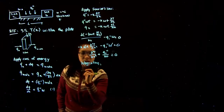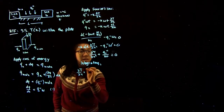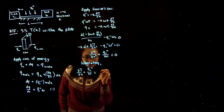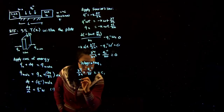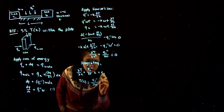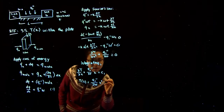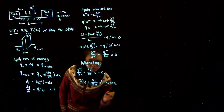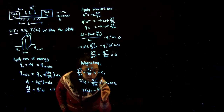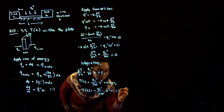Integrating we get that dT/dx plus Q0 over Kt times x is equal to C1. And the temperature profile is equal to minus Q0 over 2Kt times x² plus C1x plus C2, so T(x) equals minus Q0 over 2Kt times x² plus C1x plus C2.